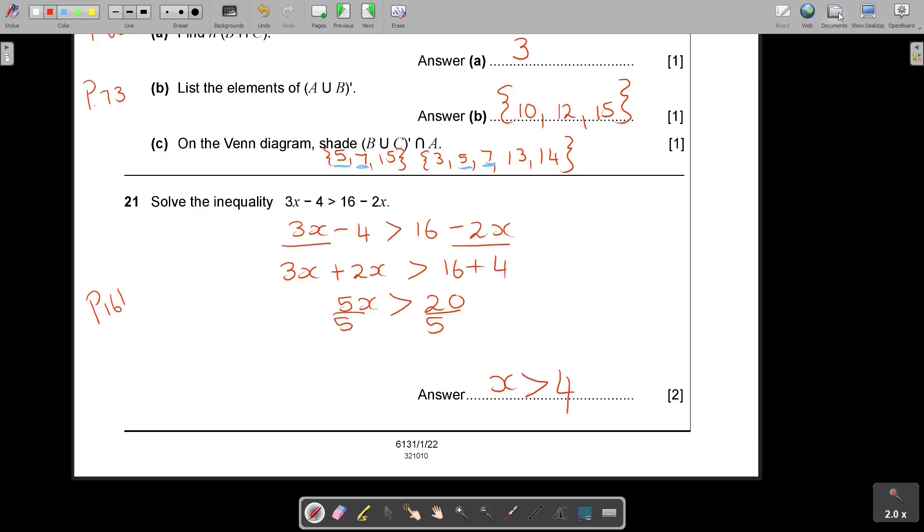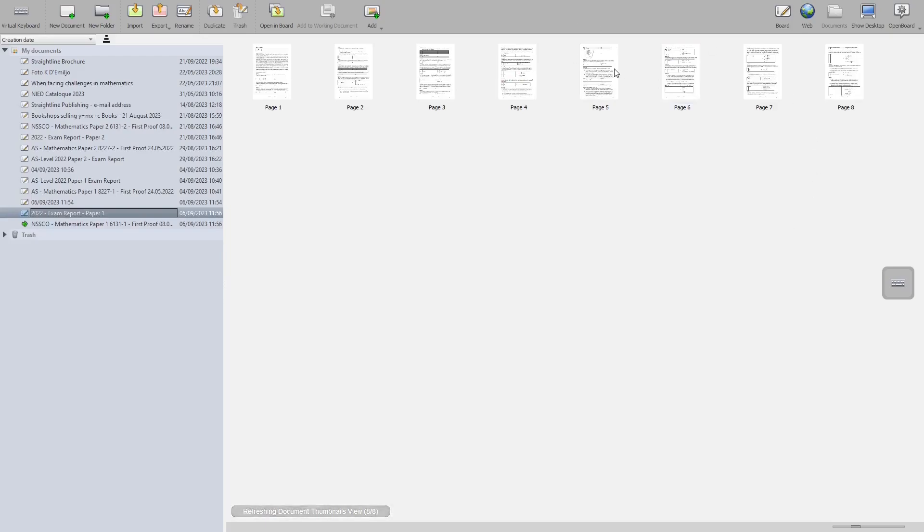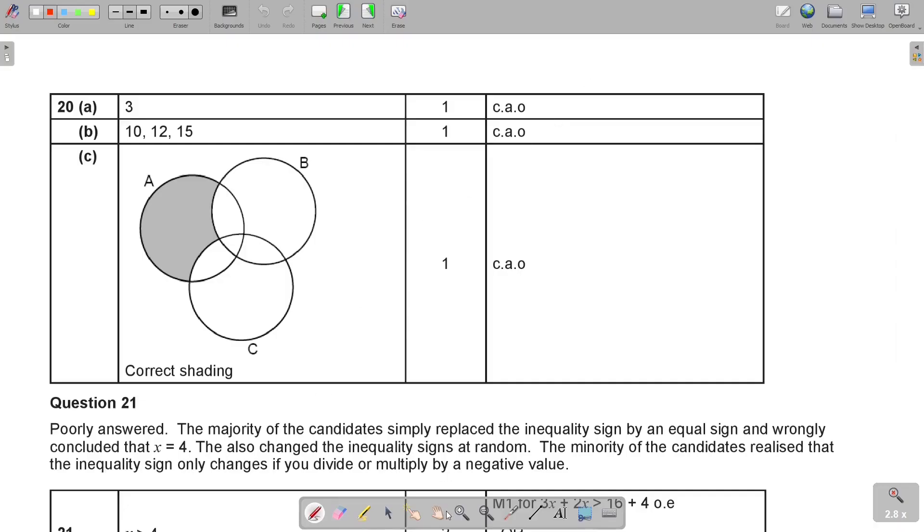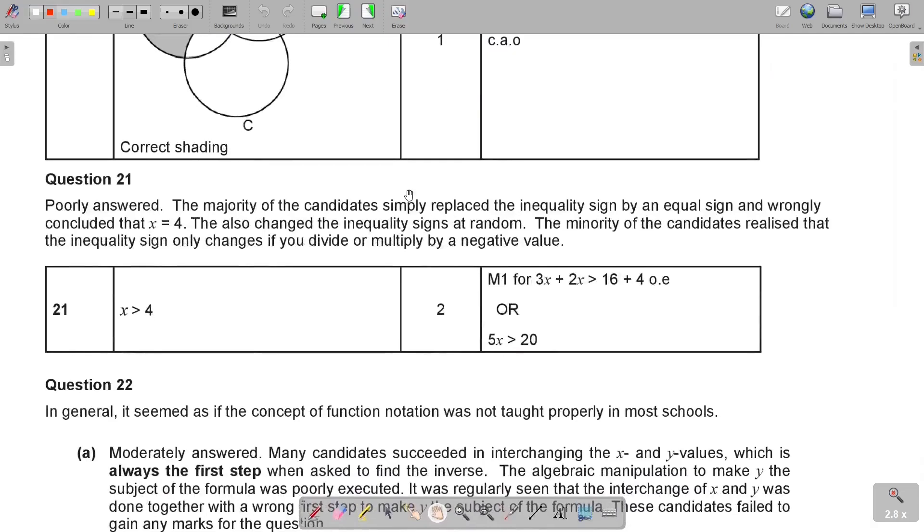So let's just go again to the exam report. And let's see what they are writing there. So here they are saying poorly answered. The majority of candidates simply replace the inequality sign by an equal sign. No. You have to keep that inequality. Although it works like an equation. And wrongly concluded that x equals 4. It's mathematically incorrect. They also change the inequality sign at random. Only if you divide by a negative. The minority of candidates realize that the inequality sign only change if you divide or multiply by a negative value. So that was the final answer.